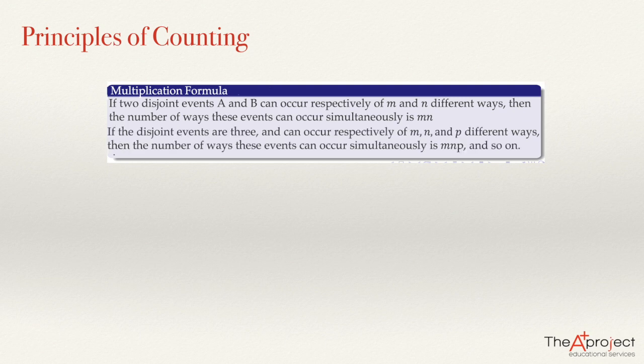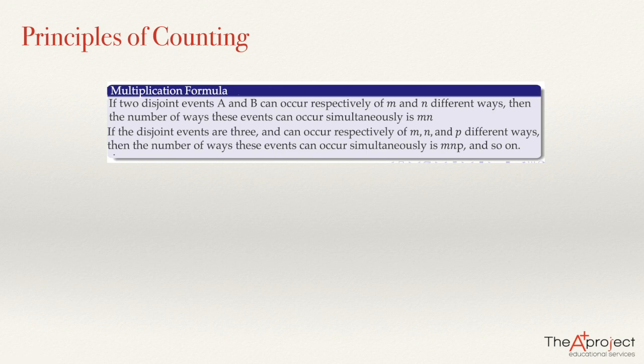If the disjoint events are three and can occur respectively in M, N, and P different ways, then the number of ways these events can occur simultaneously will be the product of these three numbers. And if you have four events, then we multiply the number of times each of these events can happen, and so on.